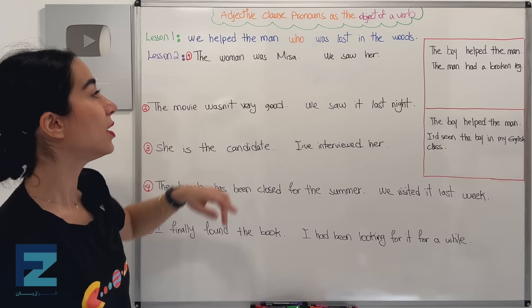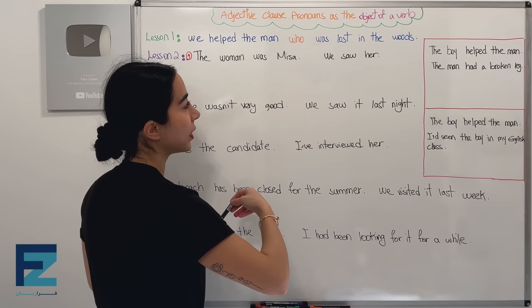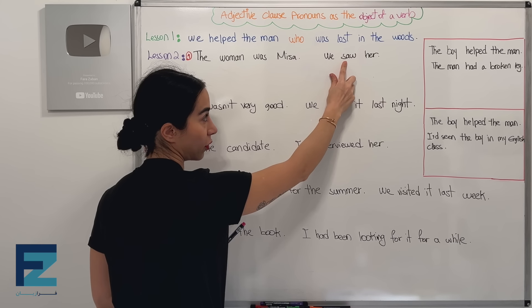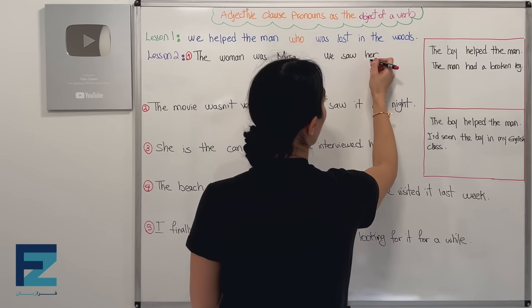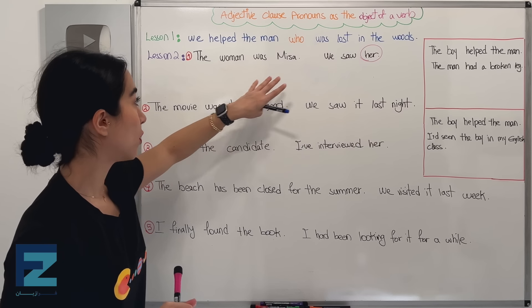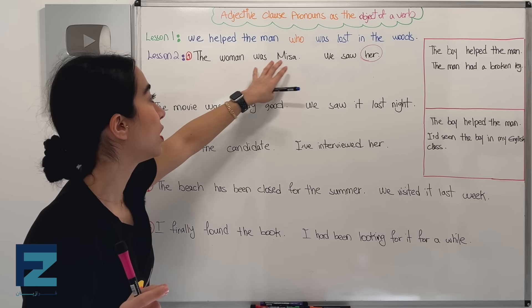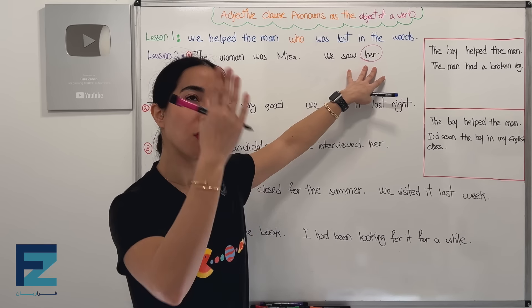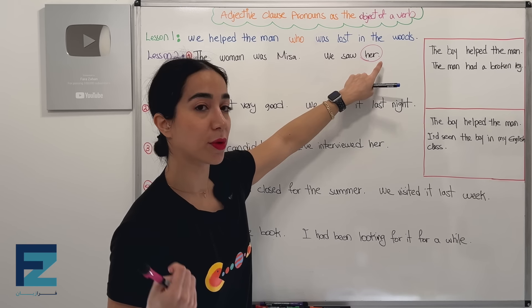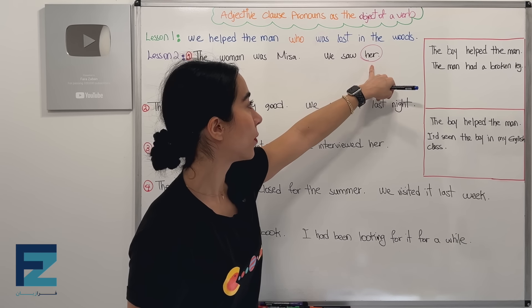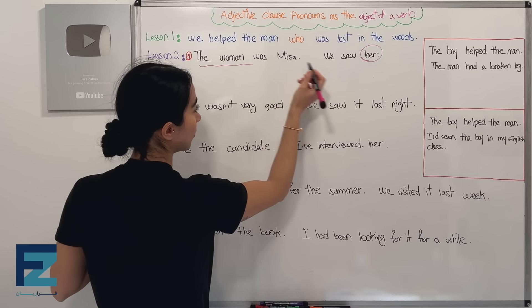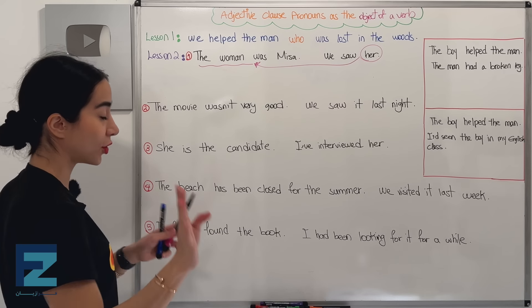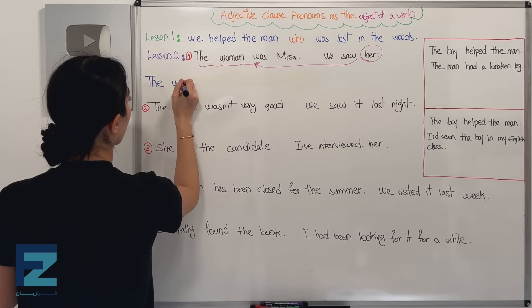The woman was Misa, we saw her. Let's look at the second sentence: 'we' is the subject of the verb, this is the verb itself, and 'her' is the object of the verb — subject, verb, object. Now, in 'we saw her,' who does 'her' refer to? To the woman. The woman was Misa, we saw her — 'her' is referring to the woman.